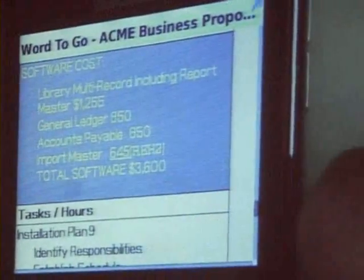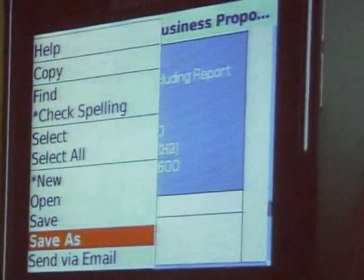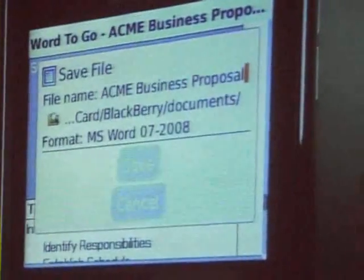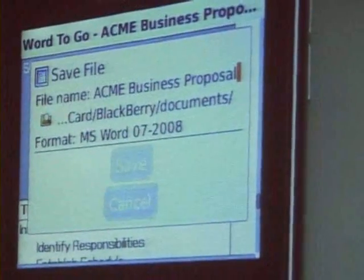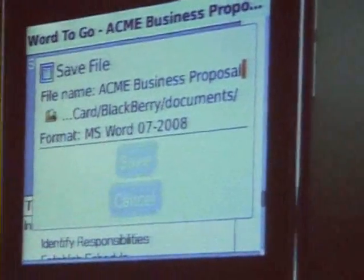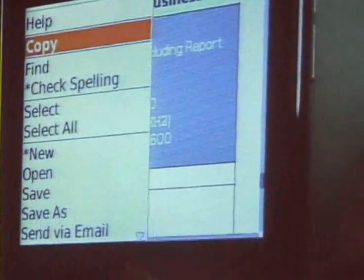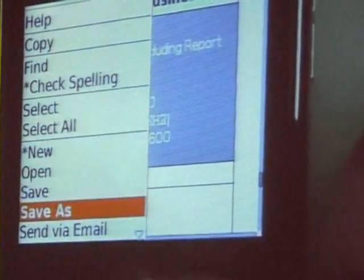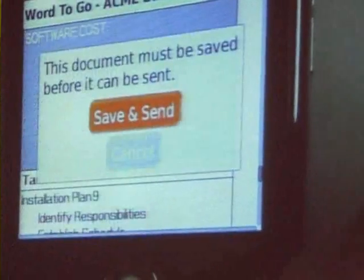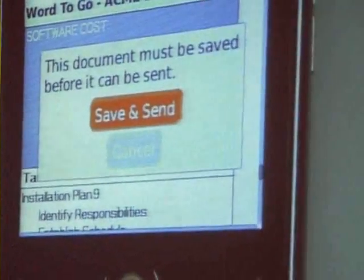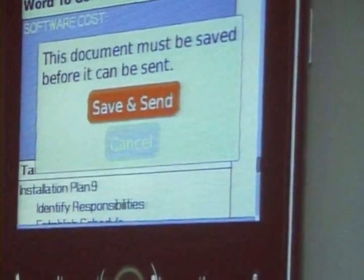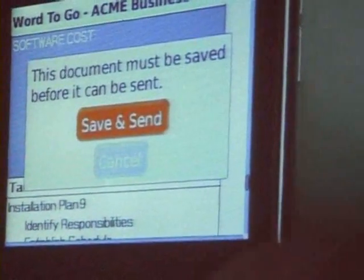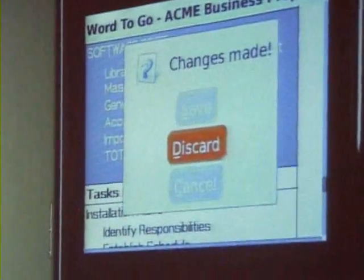I want to show you what the menu looks like and explain what those little stars mean. I can do a save or a save as. If I do a save as, I can elect to save onto a mobile media card or device memory. Or, because of the integration with BES, I can do send via email — save and send — and it'll quickly save it and attach it to a new email to send off. That's Word2Go.